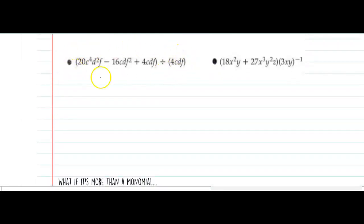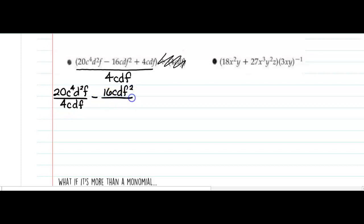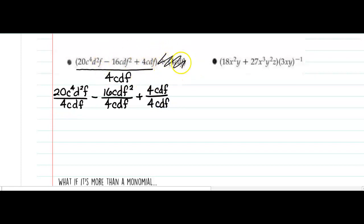This means the same thing — it's just written differently. This polynomial divided by this monomial is the same thing as writing 20c to the 4th d squared f over 4cdf, minus 16cdf squared over 4cdf as the denominator, plus the third term 4cdf over 4cdf. Just because it looked different than the first example, don't let that throw you. Dividing just means to put it in the denominator, and now we cancel and simplify.